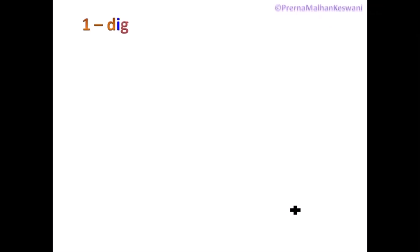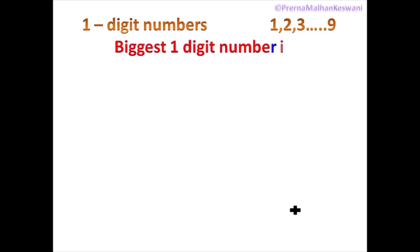Now, children, the first question which I want to ask you is: what are one-digit numbers? Can you think? Yes, the one-digit numbers are 1, 2, 3, 4, 5, 6, 7, 8, and 9. These are the single or one-digit numbers. And you know that the biggest one-digit number is 9.